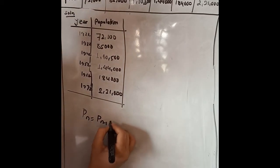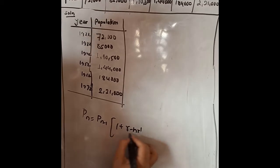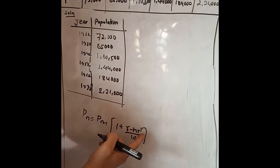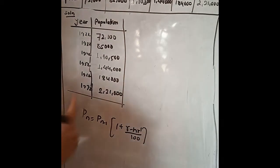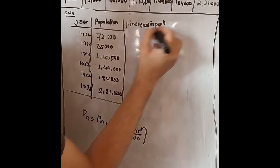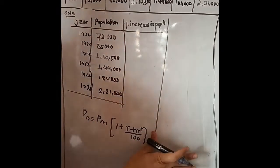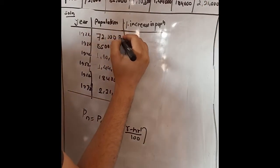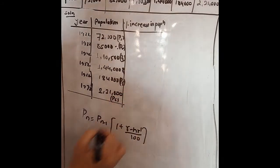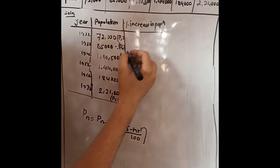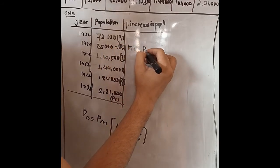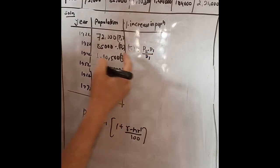We know that Pn equals Pn−1 multiplied by (1 + R − n·R′) divided by 100. This is our formula. We need to write the value of R, that is the percentage increase in population, and R′, which is the decreasing increase in population percentage. We will make a column for percentage increase in population, labeling the population values as P1, P2, P3, P4, P5, and P6. Then R1 equals (P2 − P1) divided by P1 into 100 percent.